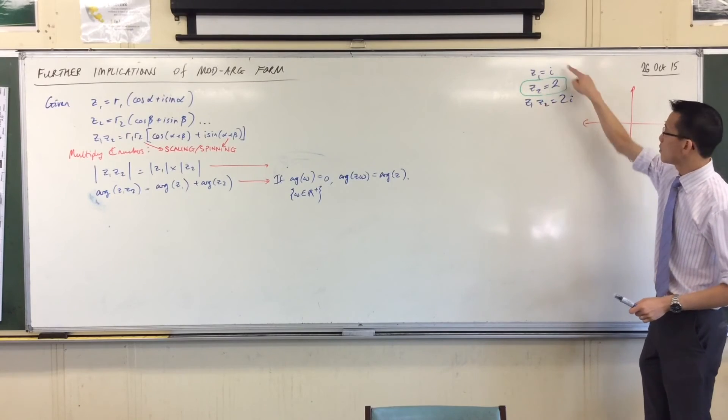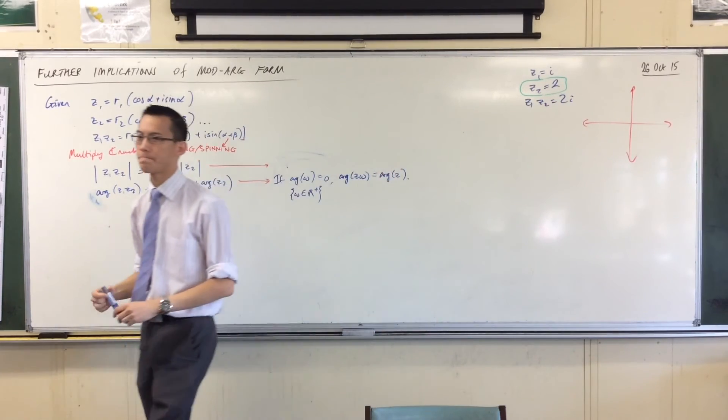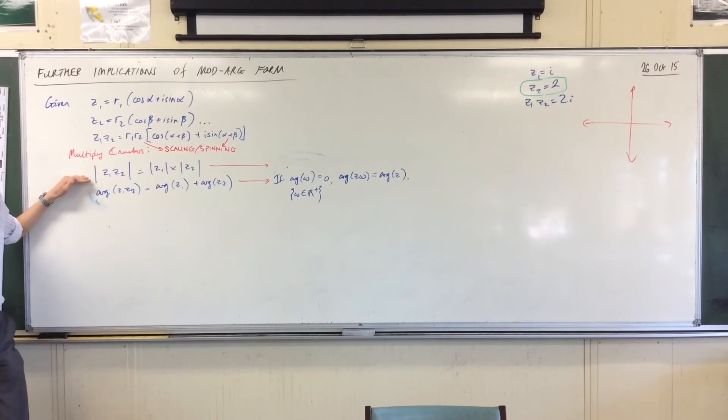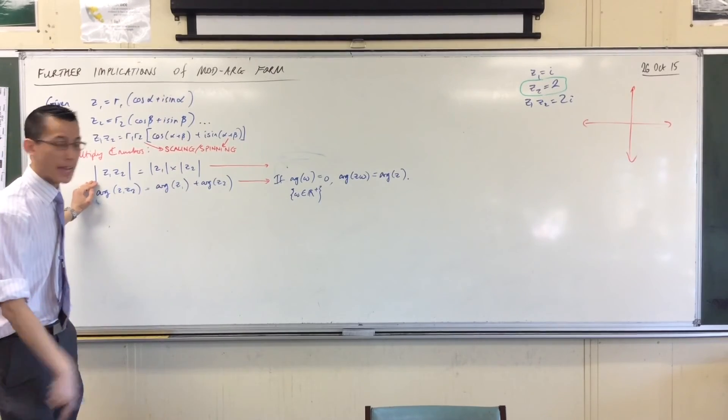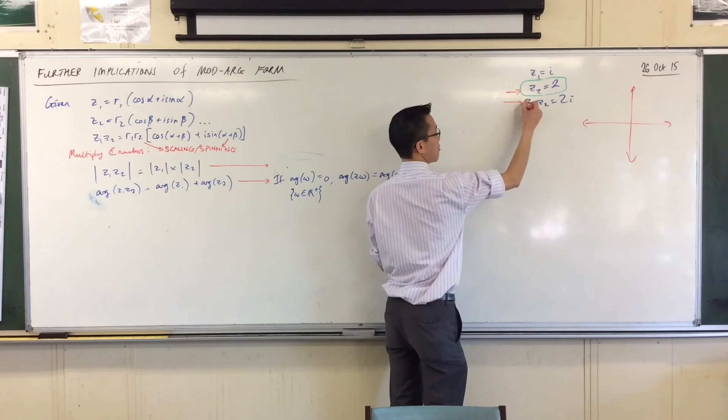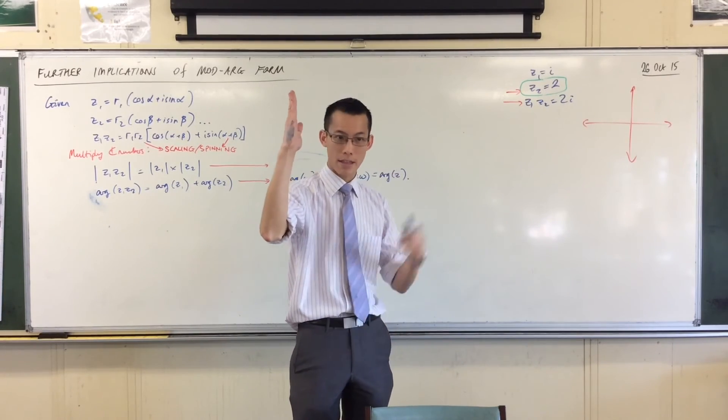Well, I want to think about now what numbers do I multiply by that leave my modulus unchanged. Do you notice the modulus of this number and this number are the same? Two and 2i - here's two and here's 2i. They're the same distance. The modulus is unchanged.